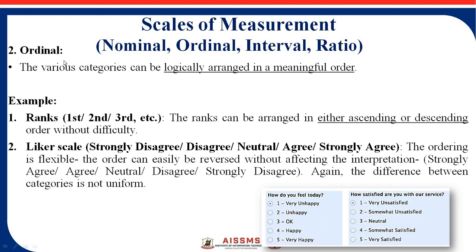The next scale is ordinal. Ordinal means there are various categories of data that can be arranged logically or in meaningful order. For example, student ranks: first, second, third — these can be arranged in ascending or descending order without difficulty. Another example is a Likert scale: strongly agree, agree, disagree, strongly disagree. You can also have emotional states: very unhappy, unhappy, okay, happy, very happy. These are examples of ordinal scale — data arranged in a meaningful format.